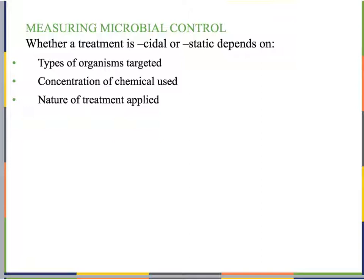Whether a treatment kills all organisms or just stops microbial growth depends on several things: the type of organism targeted — a treatment may be static against one organism but cidal against another; the concentration of the chemical used — a lower concentration may be bacteriostatic while a higher concentration may be bactericidal; and the nature of the treatment applied.